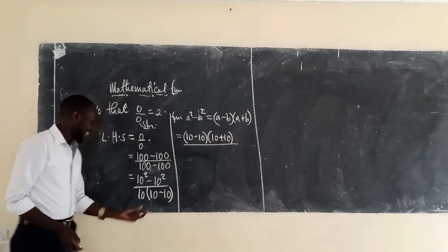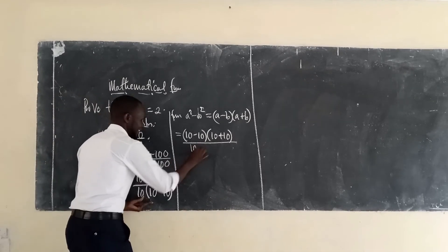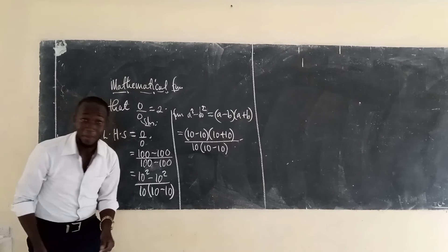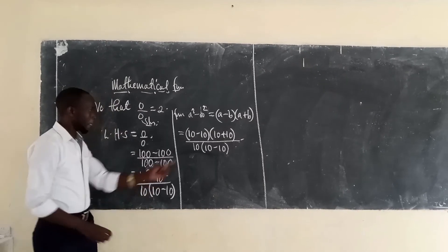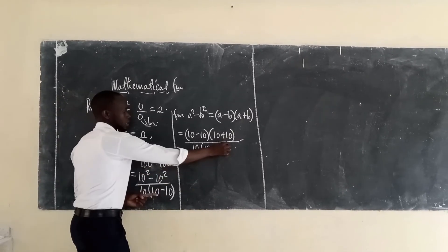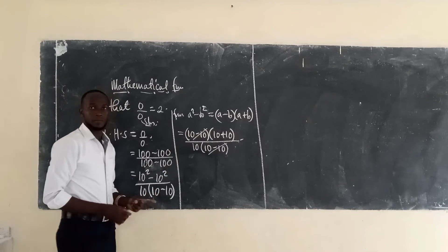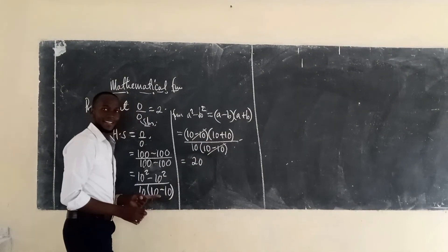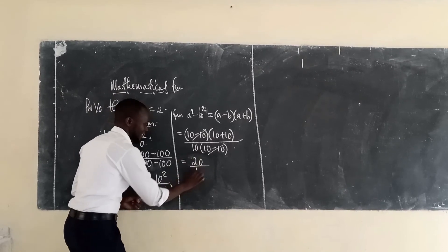Divided by, when you look at this, it's ten into ten minus ten. Now you see, you will start to smile. Some of you have seen the answer even. When you look at this, this will cancel what we start. So you get, ten plus ten becomes twenty, and this one remains ten.